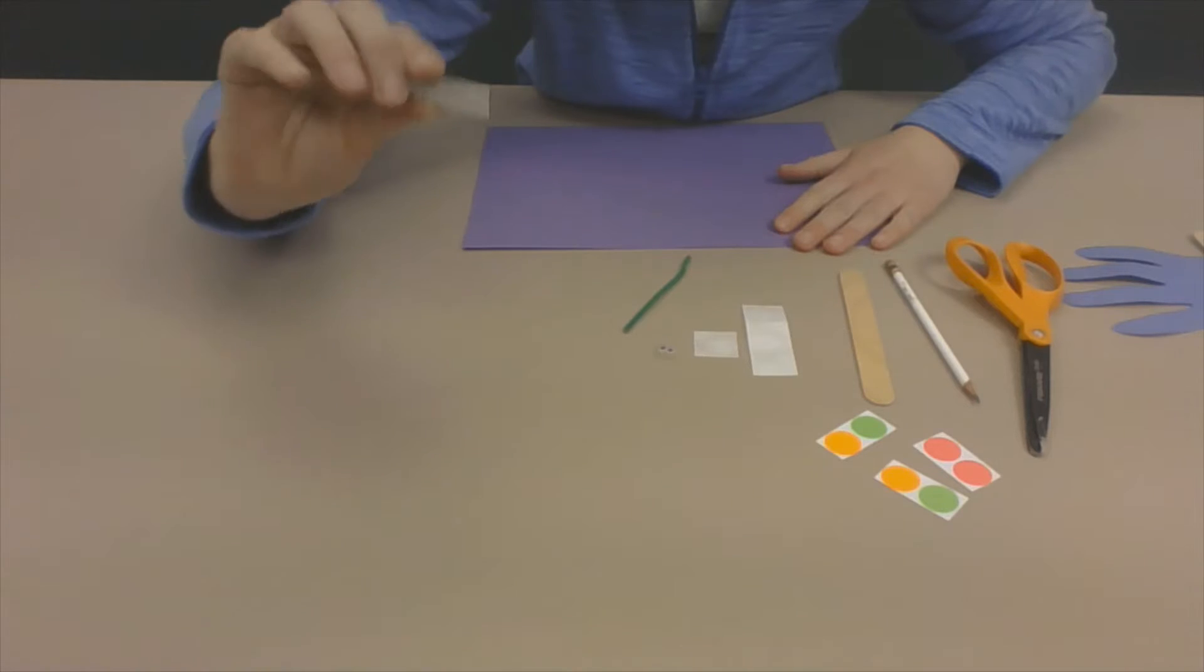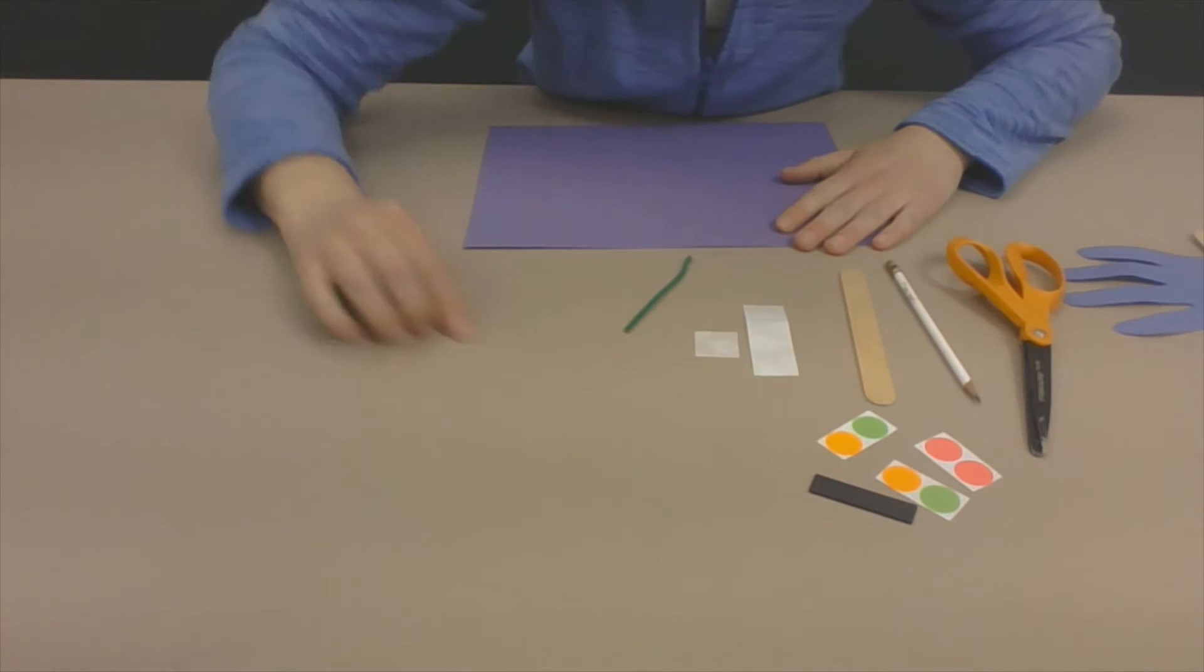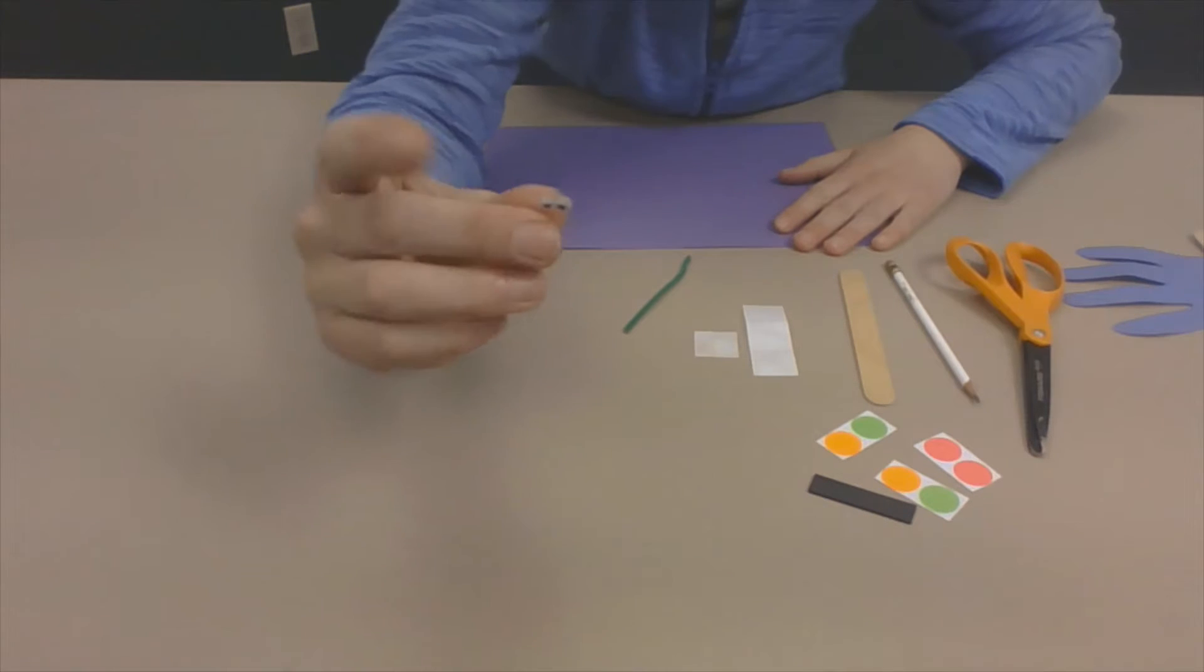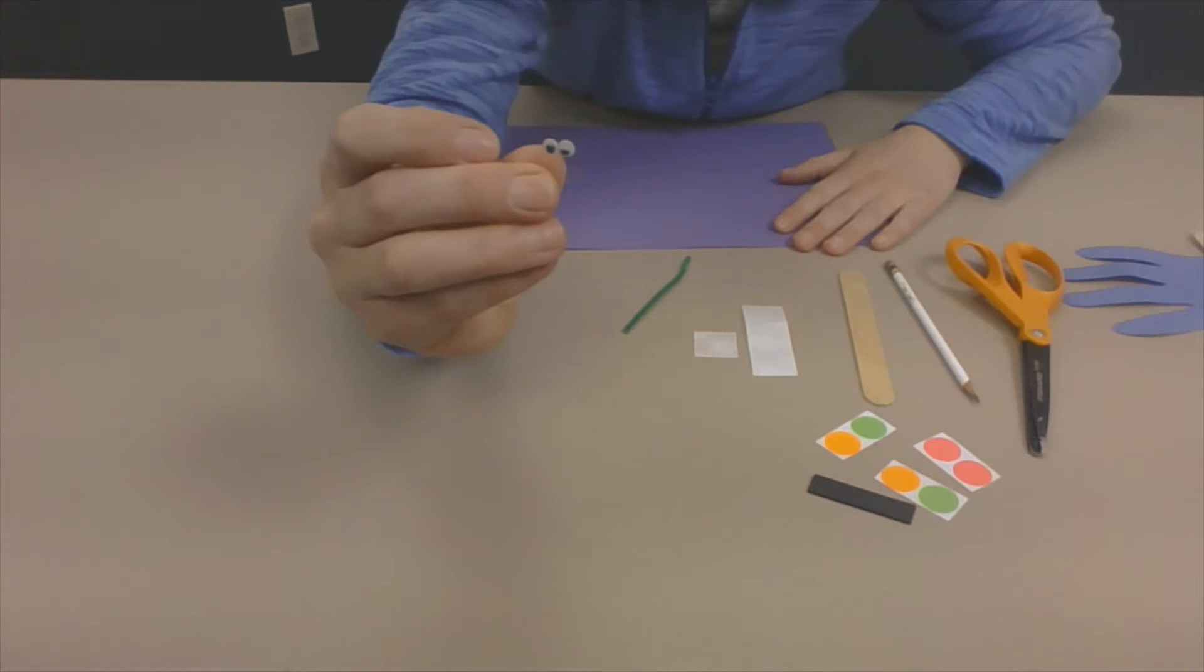A magnet has a peel sticker on the back, so it's sticky on the back. And I'm going to put that on the back of my butterfly to make it so I can stick it on my refrigerator. I also have some small googly eyes, and these googly eyes are already sticky on the back.